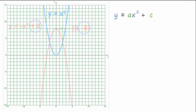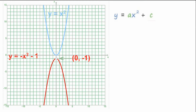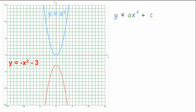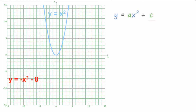If the constant term were negative — Y equals negative X squared minus 1 — we would still have a downward facing parabola, and the vertex would be at (0, -1), just like you'd expect. Y equals negative X squared minus 2 — vertex is now at (0, -2). And if we had negative X squared minus 3 — downward facing parabola, vertex at (0, -3). And one more: if we had Y equals negative X squared minus 8 — downward facing parabola, vertex at (0, -8).